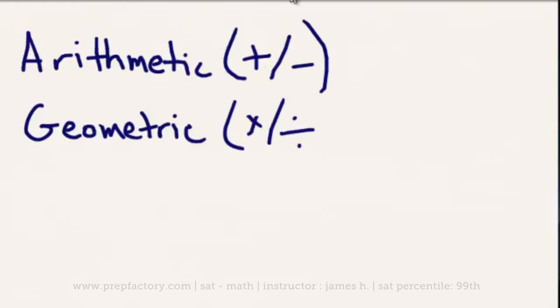Moving on to sequences, which are at least a tiny bit more difficult. A sequence is just any series of numbers that are separated by a common difference of some kind. There are two kinds of sequences: arithmetic and geometric. The primary difference is that an arithmetic sequence is separated by a common difference — such as addition or subtraction — whereas a geometric sequence is separated by a common multiplier or divisor.